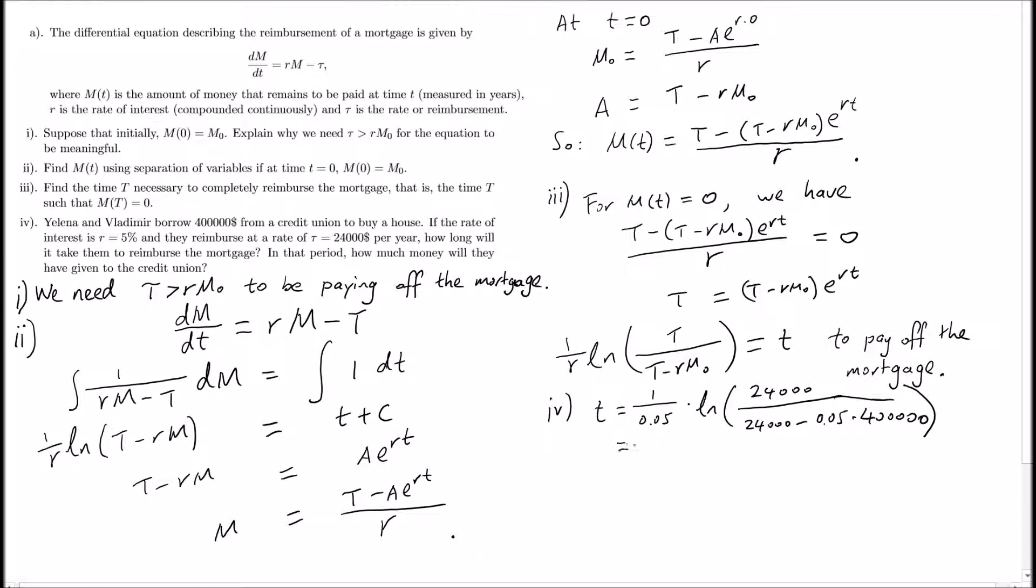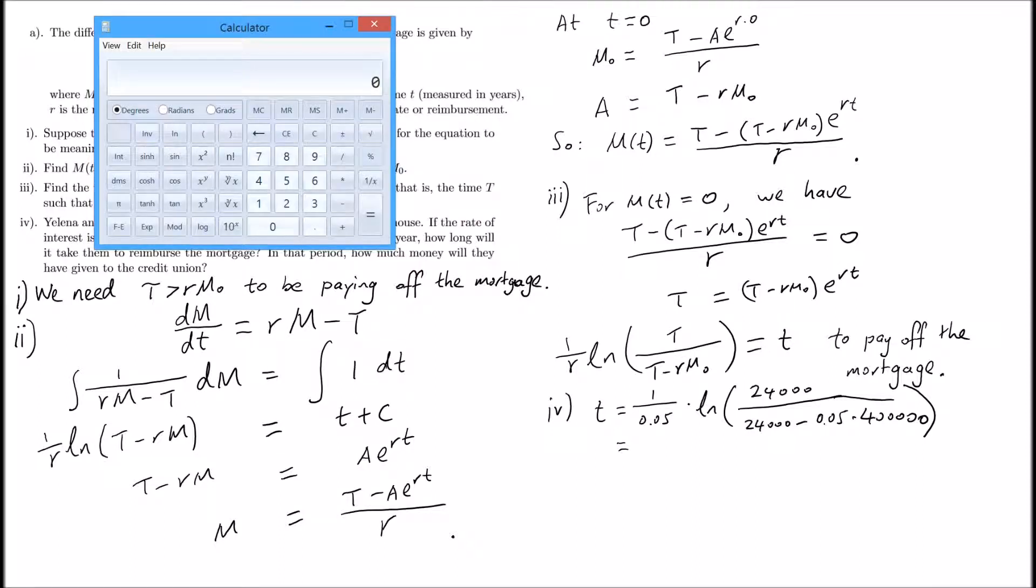From here we're going to use a calculator to first calculate what's inside the log. It's 24,000 divided by (24,000 minus 0.05 times 400,000), which equals 6. We're going to put that into the log.